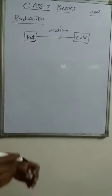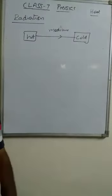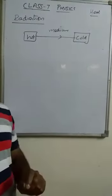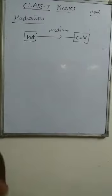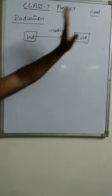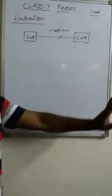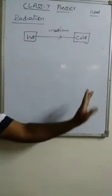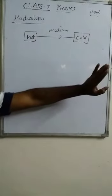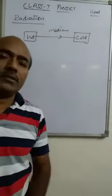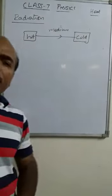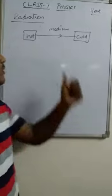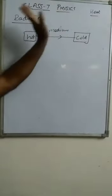In conduction, heat was transferred through the material; in convection also it was transferred through the material. But in radiation, the space between the hot object and the cold object is not affected — no medium is required for the transfer of heat. Radiation is the phenomenon in which heat is transferred from hot to cold without affecting the medium in between them.